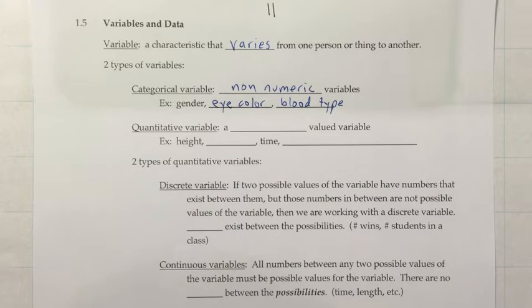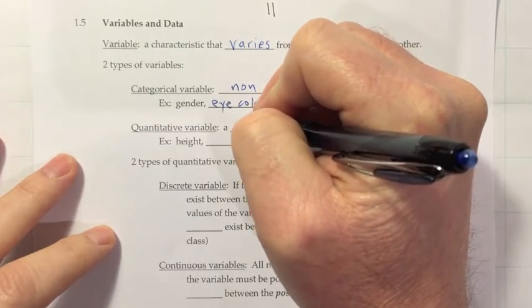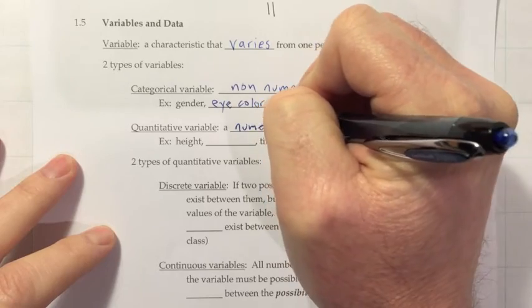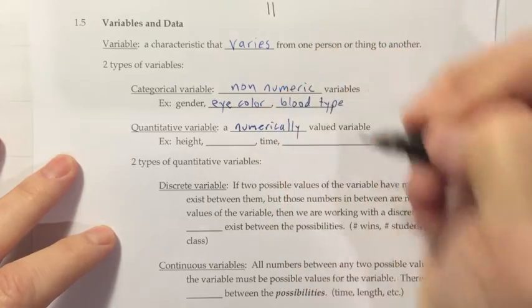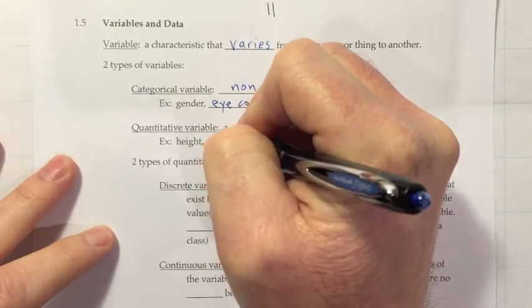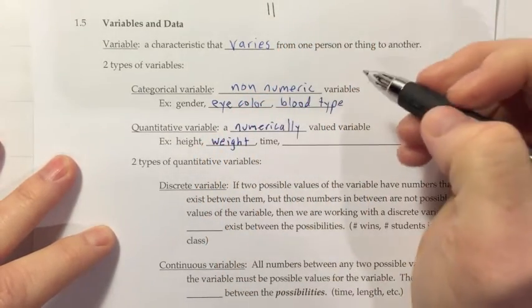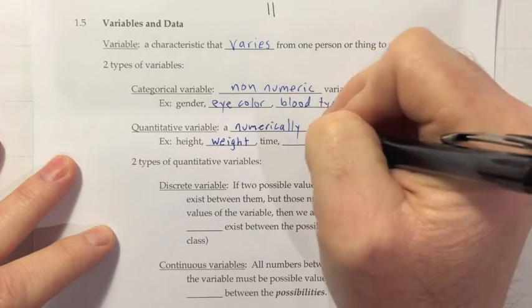If they are numbers, we'd refer to them as a quantitative variable. So, that's a numerically valued variable. And some examples of that might be height, weight, time.